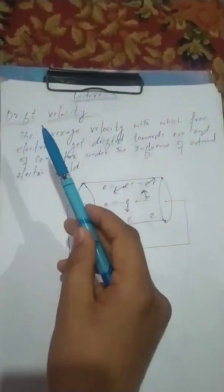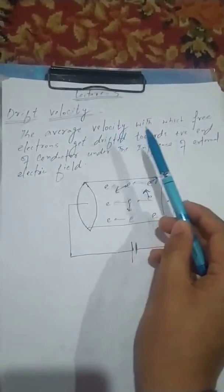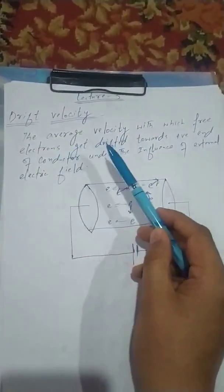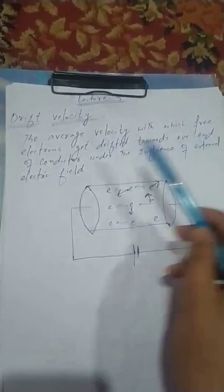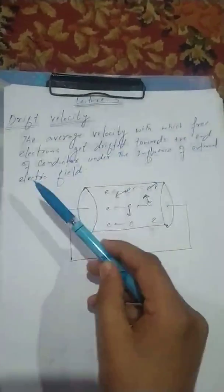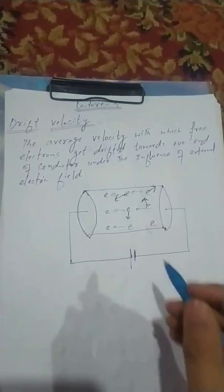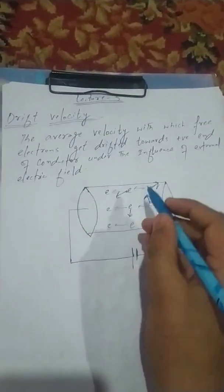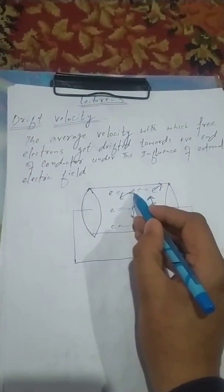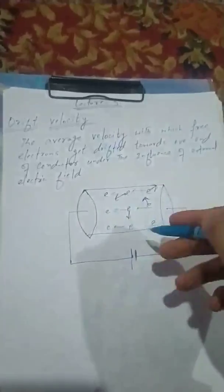So drift velocity is the average velocity with which free electrons get drifted towards the positive end of the conductor under the influence of the applied electric field. Initially, the electrons move in different directions.